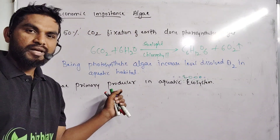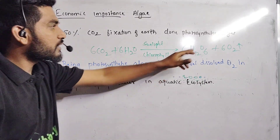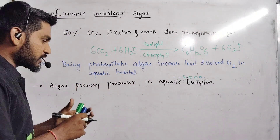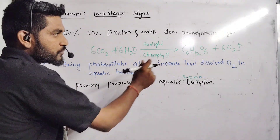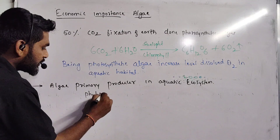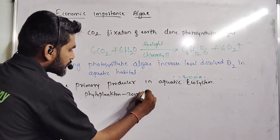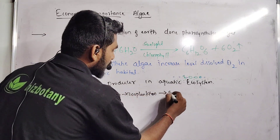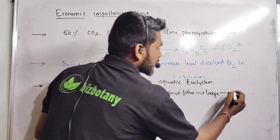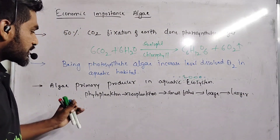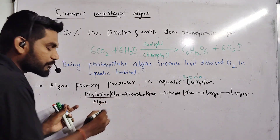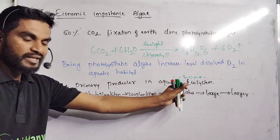Algae are the only organisms which have the capacity to photosynthesize in aquatic ecosystems. They prepare their own food, and that food is eaten by other organisms. In food chains, small algae are called phytoplanktons. Phytoplanktons are eaten by zooplanktons, zooplanktons are eaten by small fishes, small fishes are eaten by large fishes, and large fishes are eaten by larger fishes like sharks. So phytoplanktons, which are nothing but algae, are the primary producers of food in aquatic ecosystems.